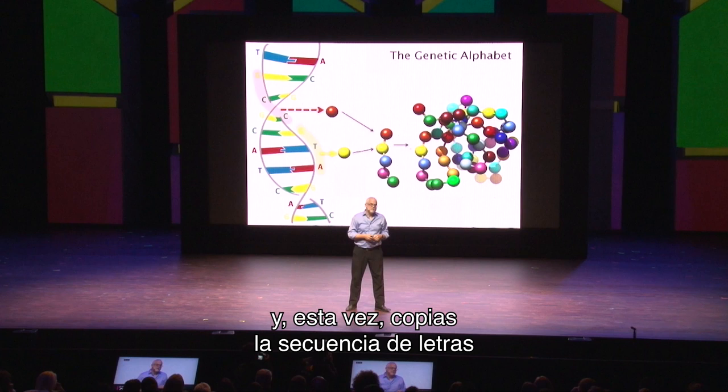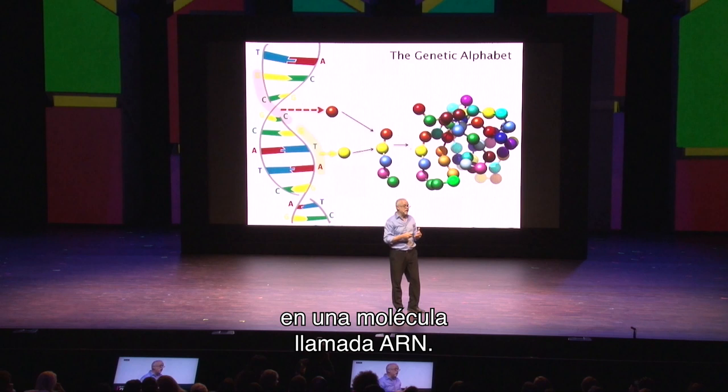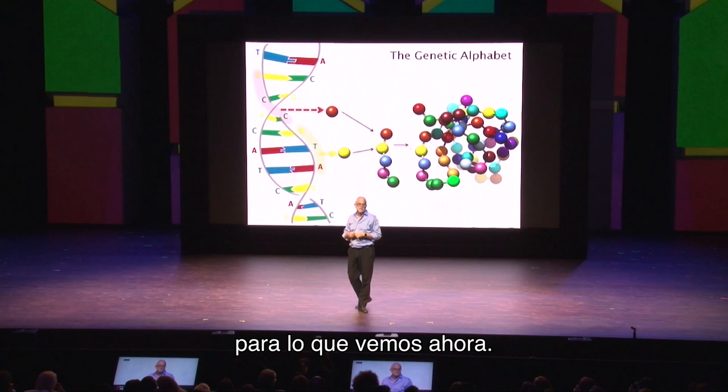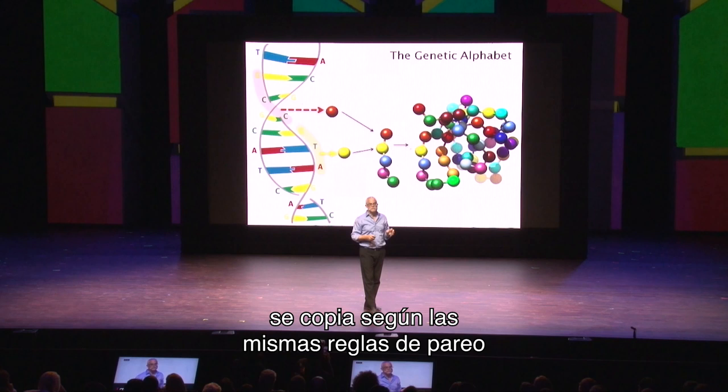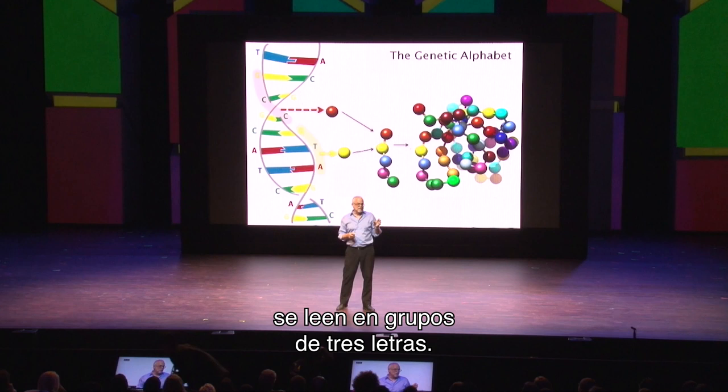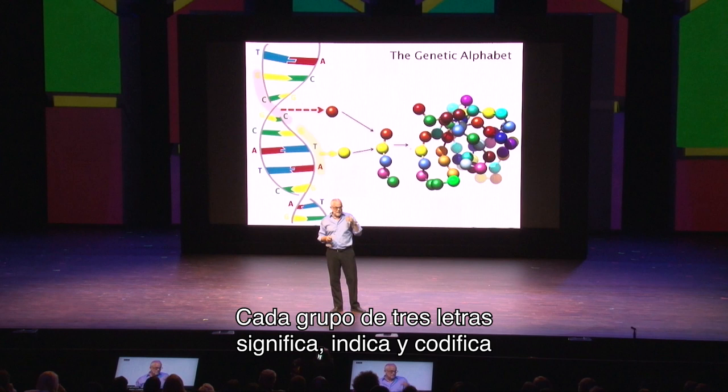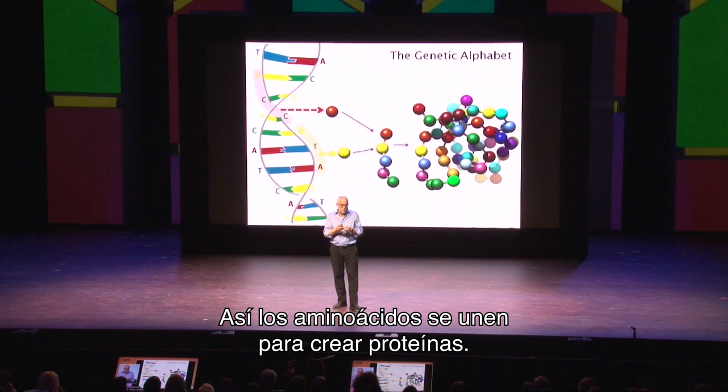You again split the DNA into its individual strands, and this time you copy that sequence of letters into a molecule called RNA. RNA is really similar to DNA, just subtly different in a way that's not important here. Then that RNA goes out and that's what makes proteins. The sequence of DNA is copied by those same base pairing rules into RNA, and then the RNA is read — those letters in RNA are read in groups of triplets, in groups of three letters. Each group of three letters encodes a specific amino acid.